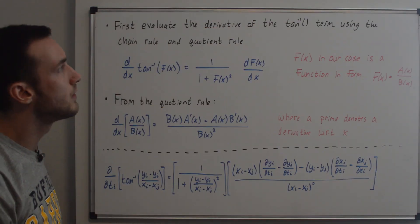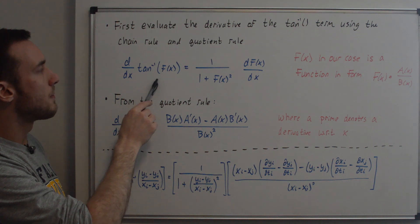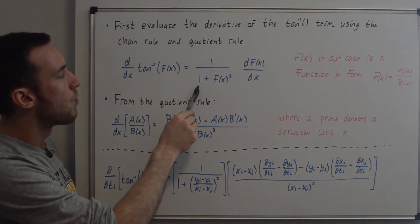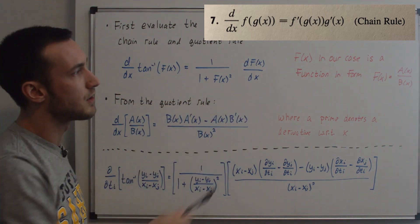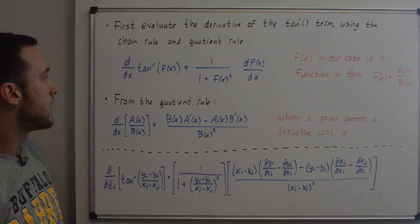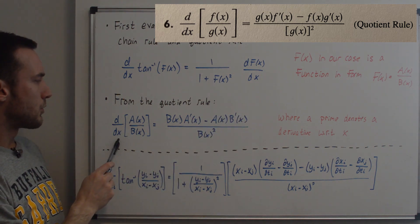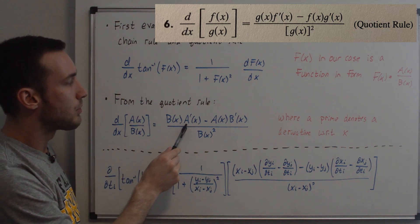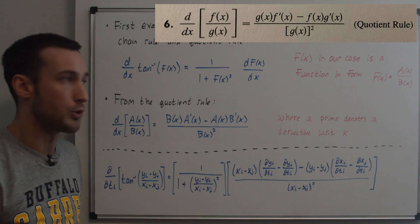First we're going to evaluate the derivative of the inverse tangent term using the chain rule and the quotient rule. We have the derivative of the inverse tangent, where the argument is a function of x: 1 over (1 plus f(x) squared), times df(x)/dx from the chain rule. Since f(x) is in the form a(x)/b(x), from the quotient rule the derivative of a(x)/b(x) equals b(x)·a'(x) minus a(x)·b'(x), all over b(x) squared, where prime denotes derivative with respect to x.